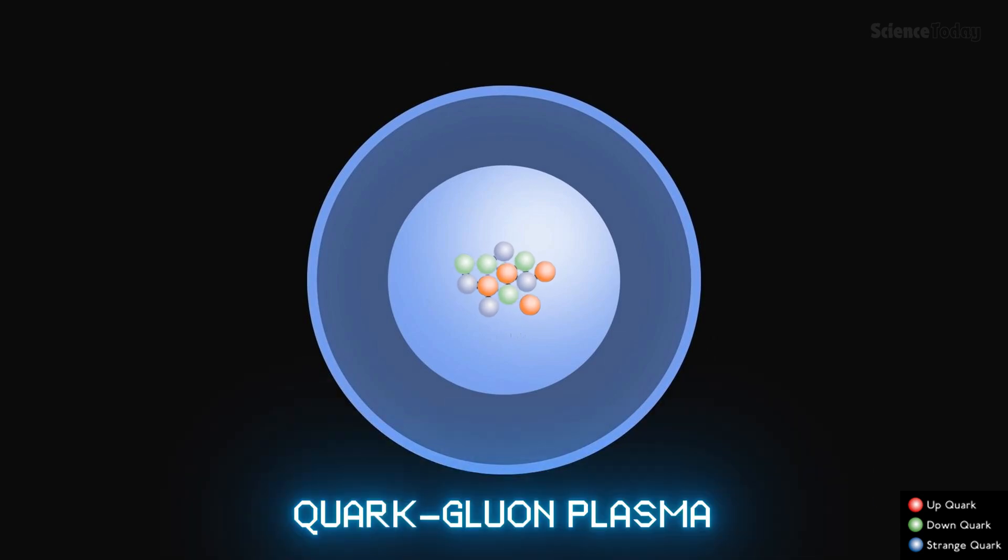Here, a new frontier emerges. Inside this ultradense core, neutrons could dissolve into their fundamental components, quarks. These subatomic particles, normally confined within protons and neutrons, could form a sea of free quarks, a state of matter called quark-gluon plasma.